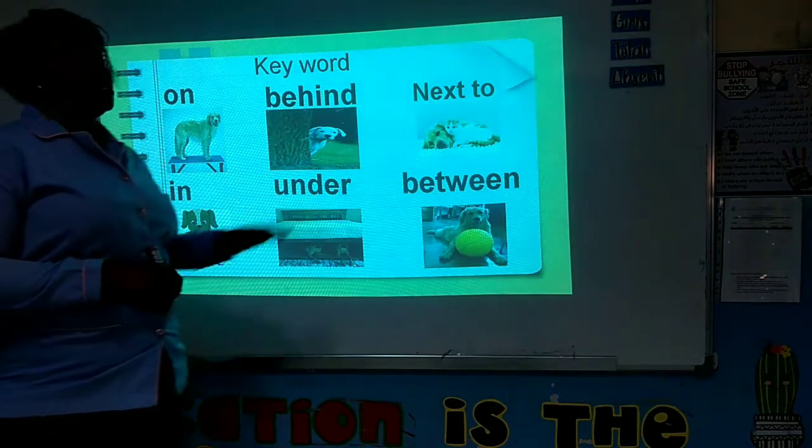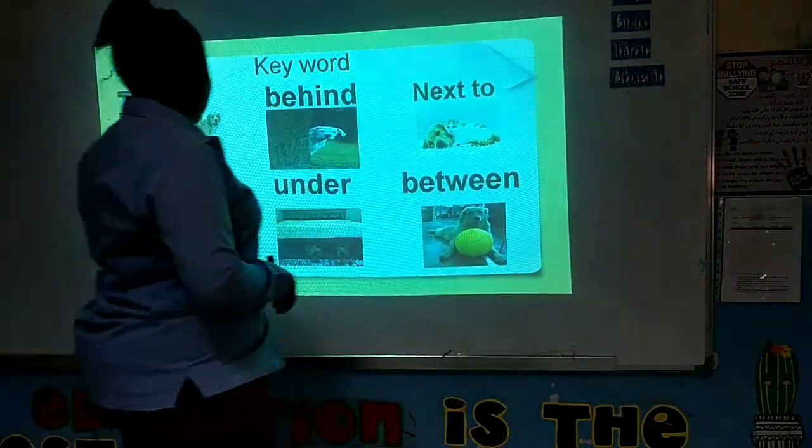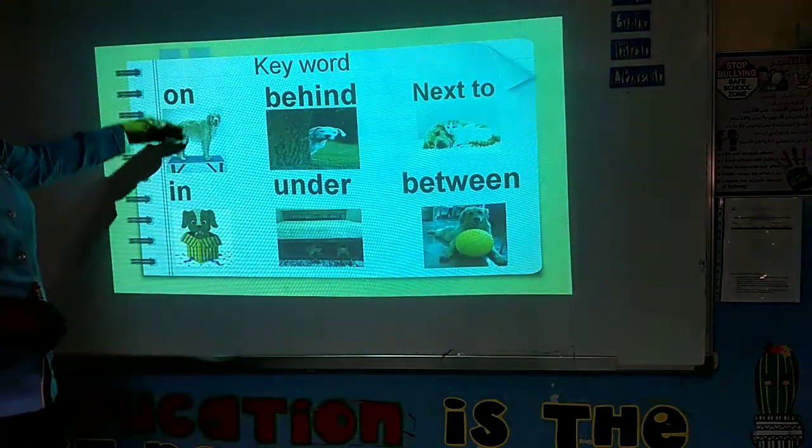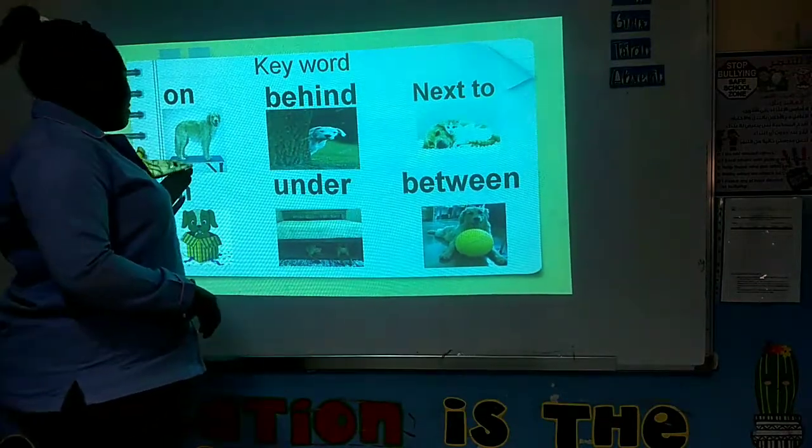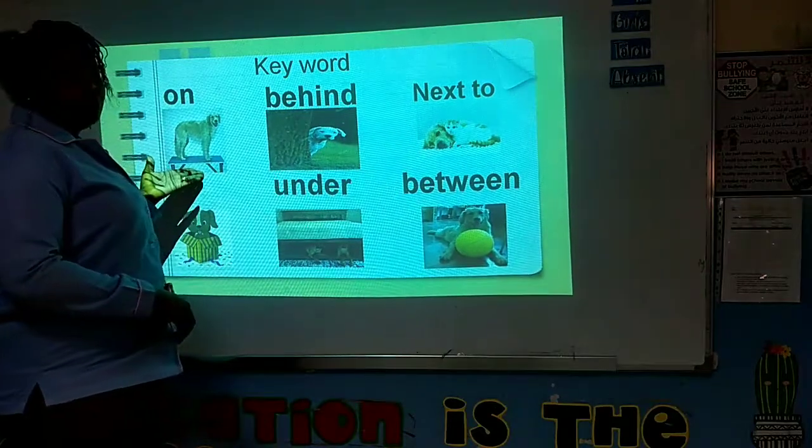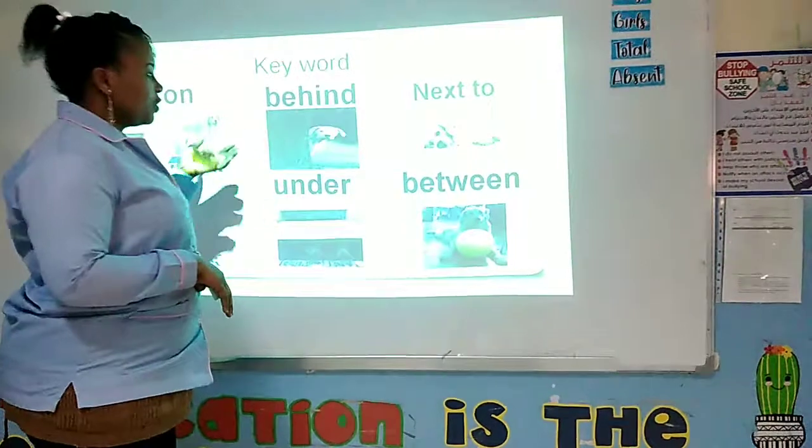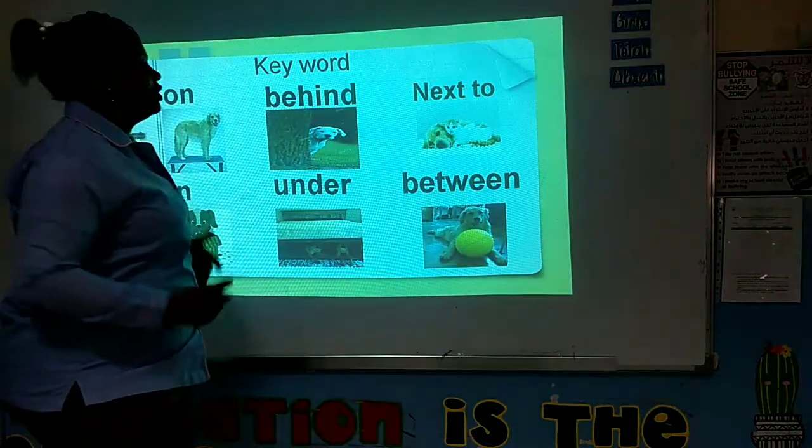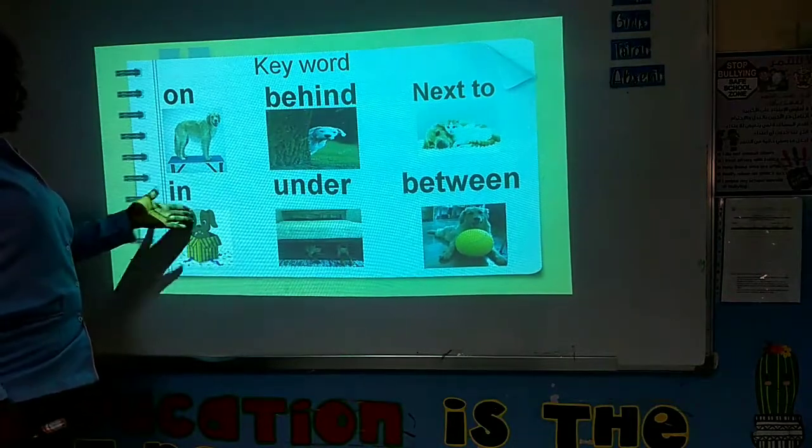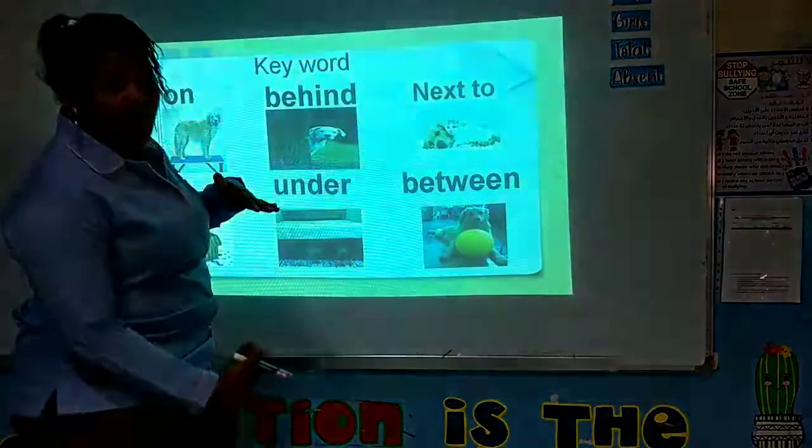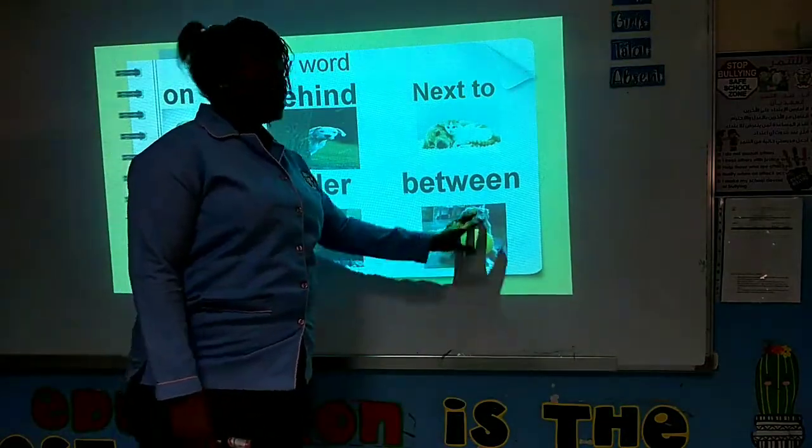This is all about the keywords. These are the keywords we'll be using in our lesson today: on, behind, next to, in, under, between. Now look at the dog. It's right to say the dog is on the bench or on the table, but it's not right to say the dog is behind the table. The dog is behind the tree. The cat is next to the dog. The dog is in the box. The dogs are under the bed. The ball is between the legs of the dog.